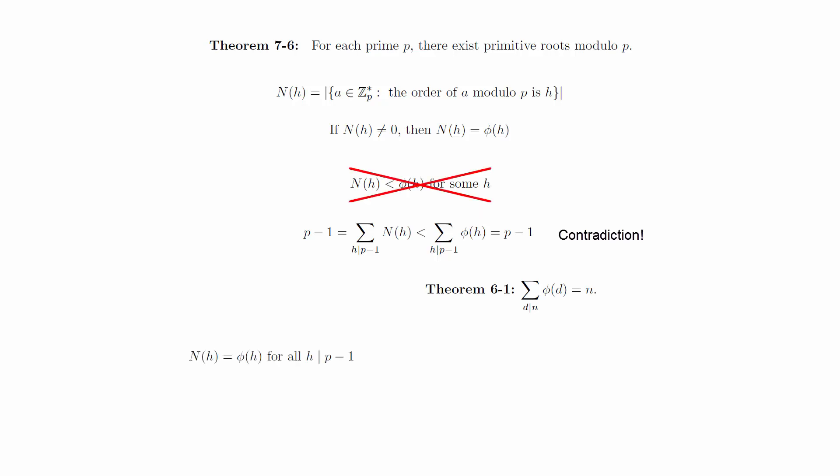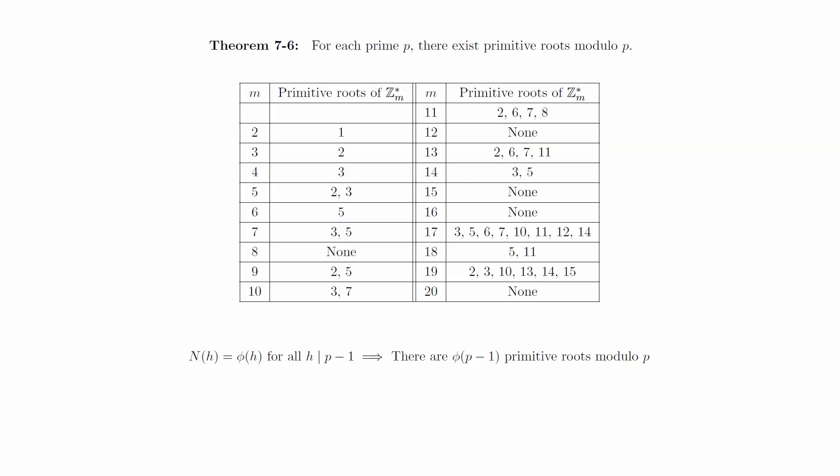This means that N(h) equals phi of h for all h dividing p minus 1. In particular, we can see that there are phi of p minus 1 primitive roots modulo p. If we look back at the chart from earlier, we can verify that this is the case.